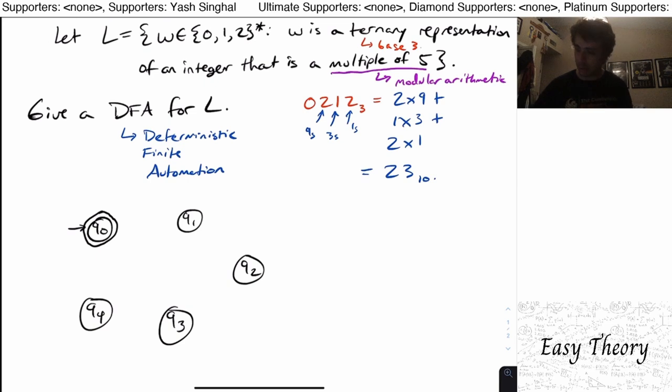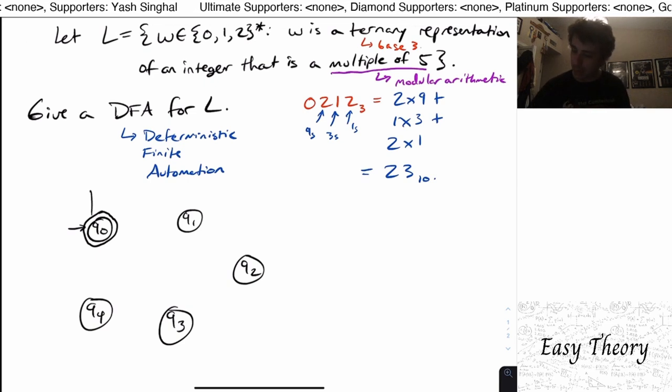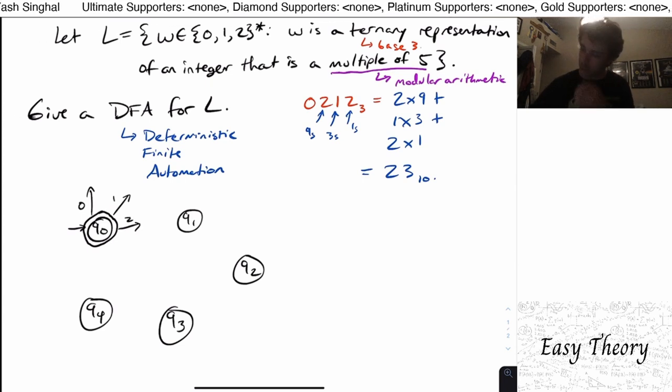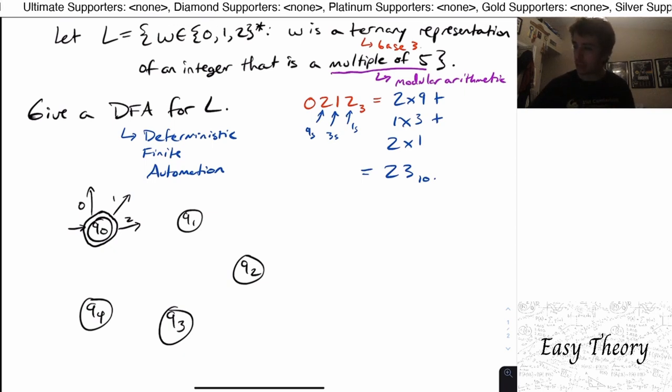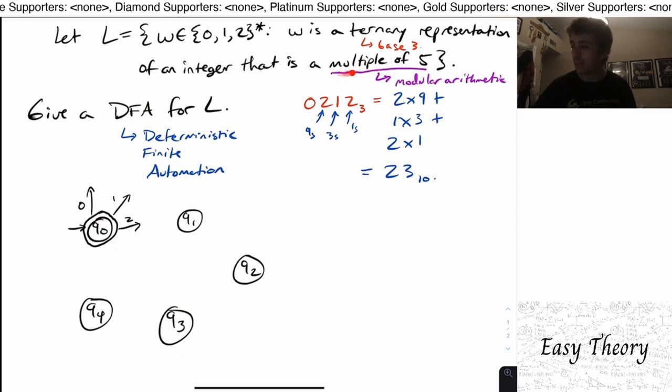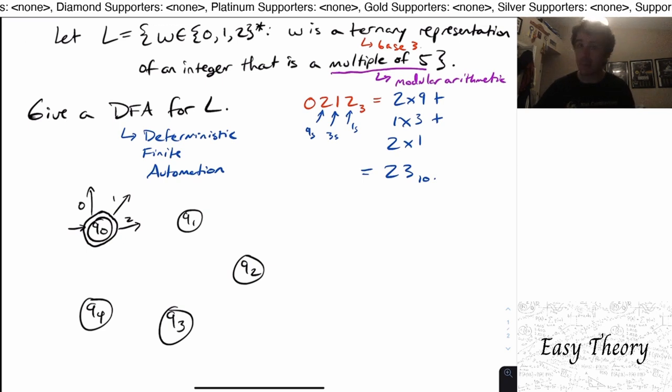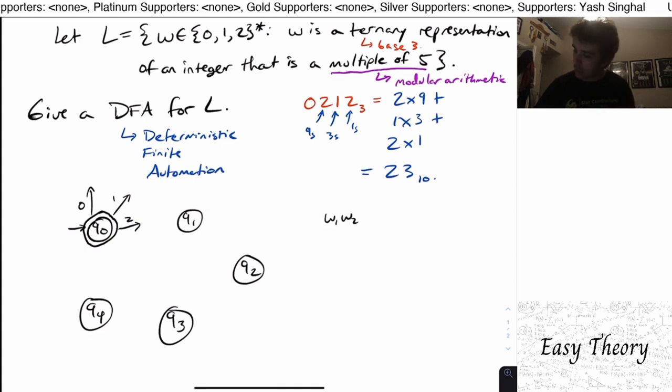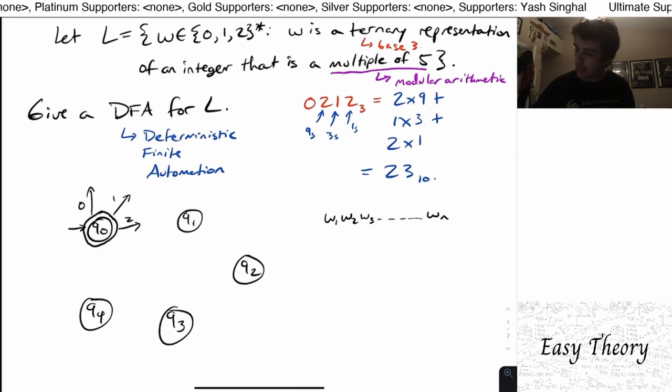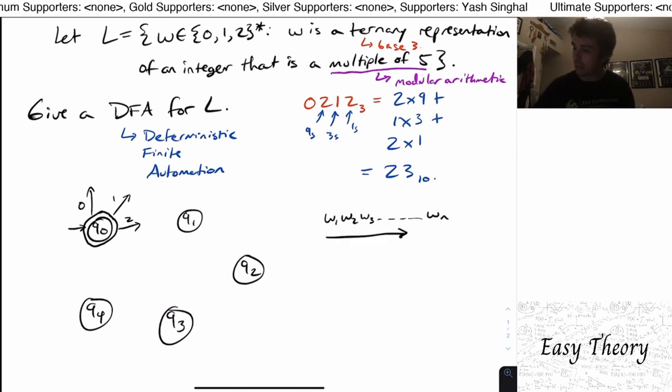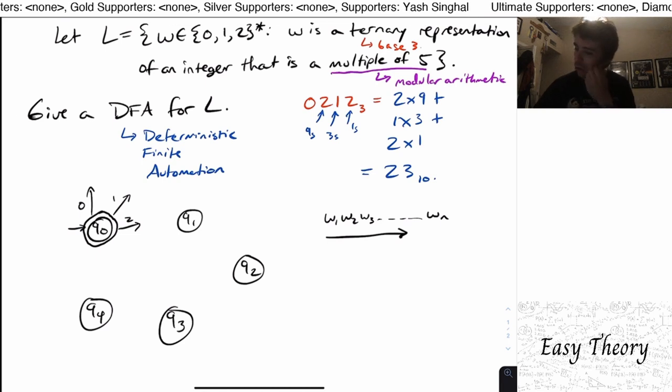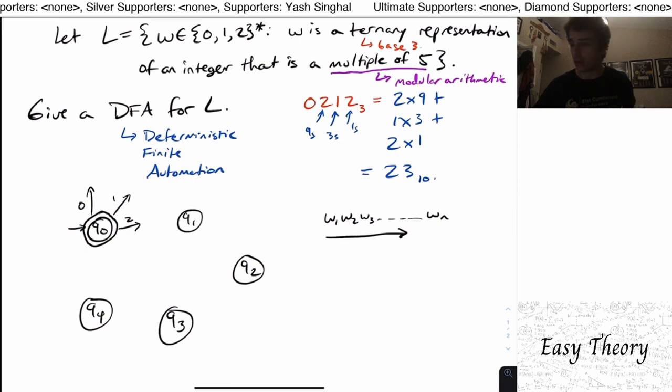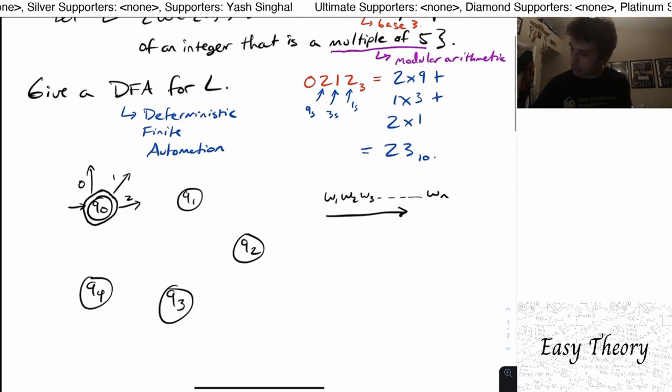So now what we need to do is, because we need to make a DFA, we need a transition on 0, transition on 1, and a transition on 2 somewhere. So whenever you're faced with a problem like this, where you're having to make a DFA for a multiple of something, well what you need to think about is how the DFA is processing the string. So remember, if we're given a string w1, w2, w3 up to wn, the DFA is processing it from left to right. So when we are looking at this number for example, we're reading the 0 first, not the 2 over here. So we're reading the 0 first.